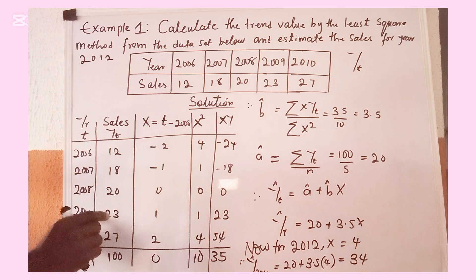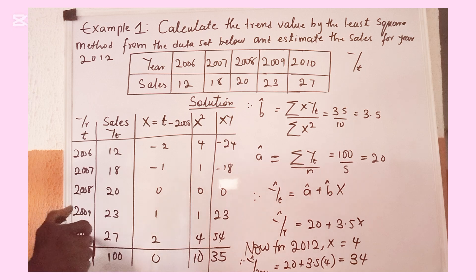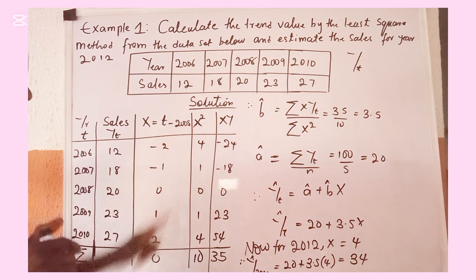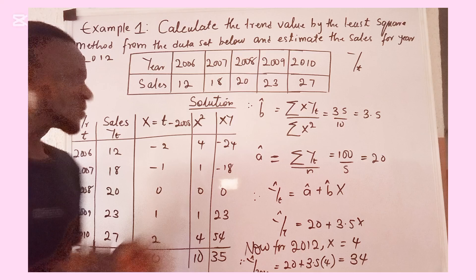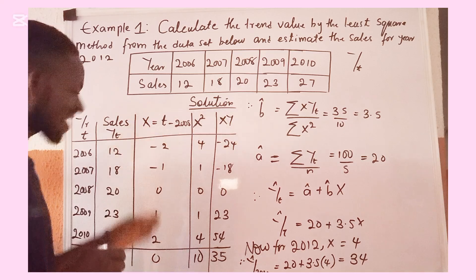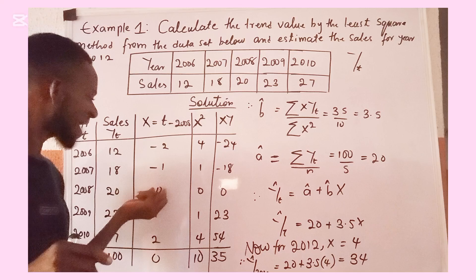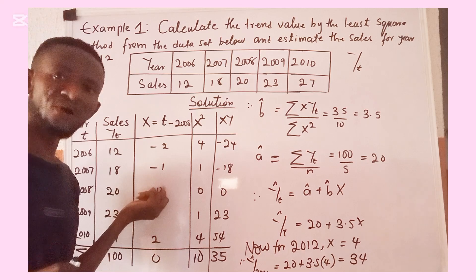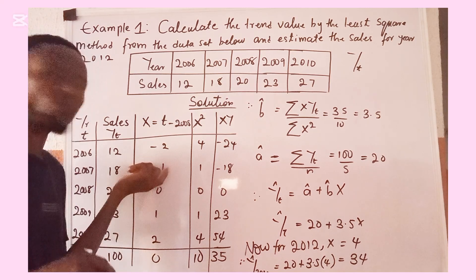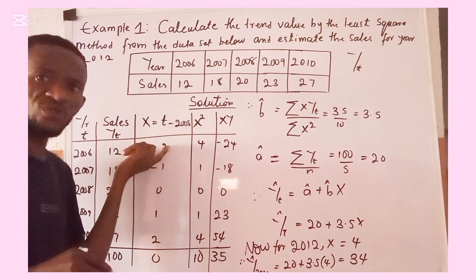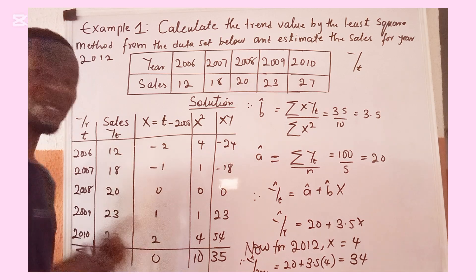For 2009 minus 2008 you get 1, and for 2010 minus 2008 you get 2. So our x here stands for time, with the origin at 0. Time backwards is minus 1 and minus 2, and time going forward is 1 and 2.